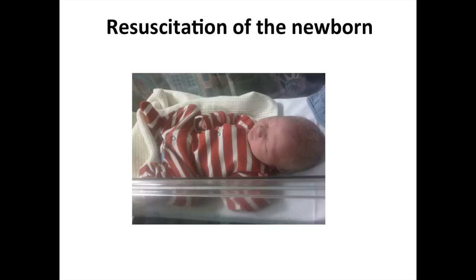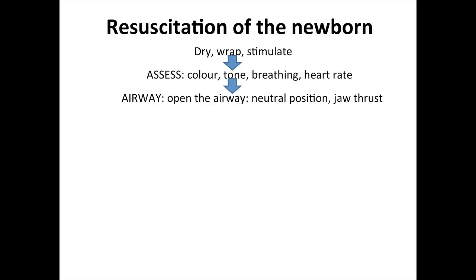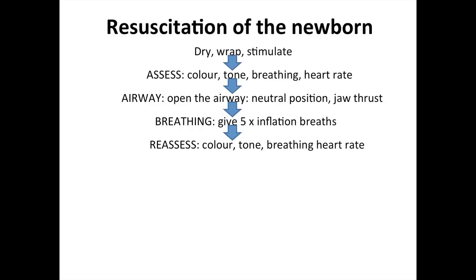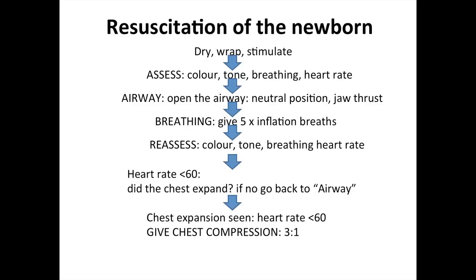The algorithm of resuscitation of the newborn: first, dry, wrap and stimulate the baby. Assess colour, tone, breathing and heart rate. Open the airway in the neutral position and use a jaw thrust if necessary. If there is no or inadequate breathing, give five slow inflation breaths over two to three seconds. Reassess colour, tone, breathing and heart rate. If the heart rate is still less than 60, check if the chest expanded — if not, go back and reposition and redo inflation breaths. If the chest did expand and heart rate is still less than 60, give chest compressions at a ratio of 3 to 1. After 30 seconds, if failure to respond, move on to drugs.